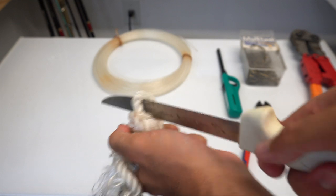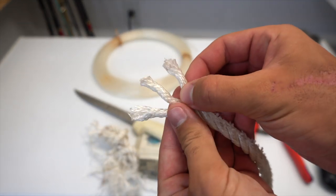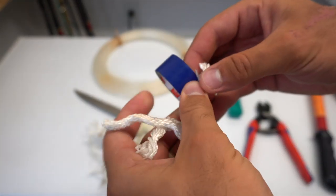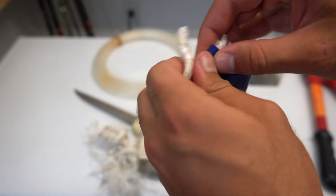Next you want to cut the rope with a knife so you can separate the three different strands. Once you have each strand separated, you want to wrap some tape around the end just so it stops the strands from unraveling.